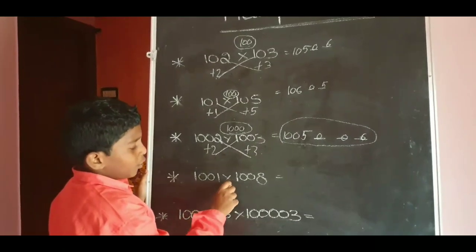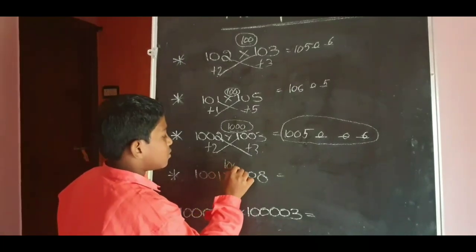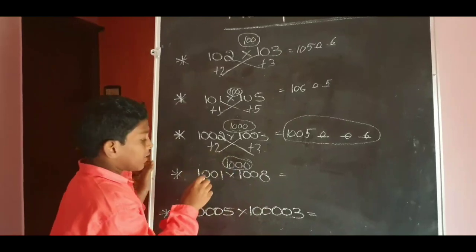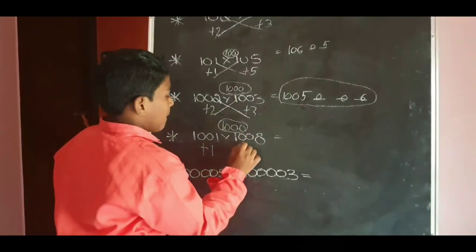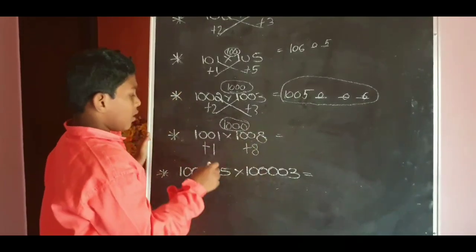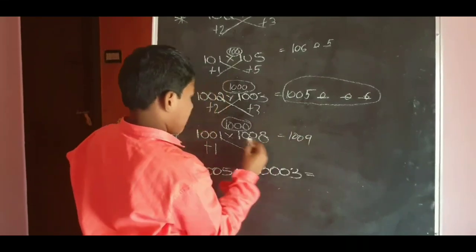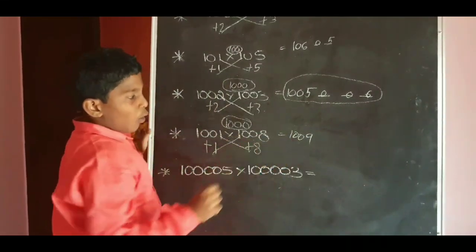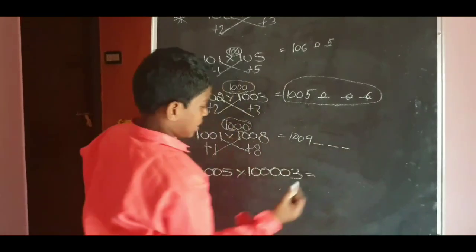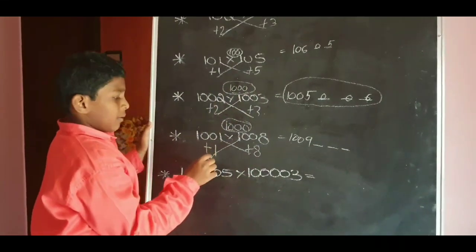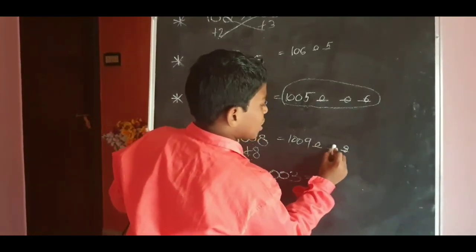Next: 1001 into 1008. This is also nearest to 1000. For 1000, 1001 plus 1; 1008 plus 8. 1001 plus 8 equals 1009. 1008 plus 1 equals 1009. For 1000, three zeros means still three digits. 1 into 8 equals 008. The answer is 1009008.